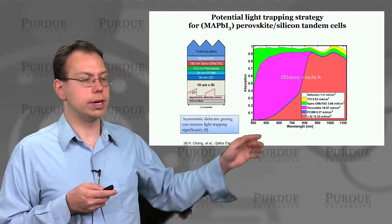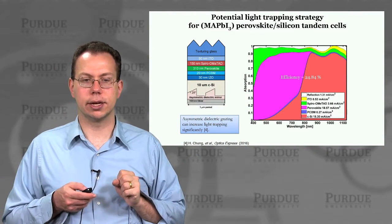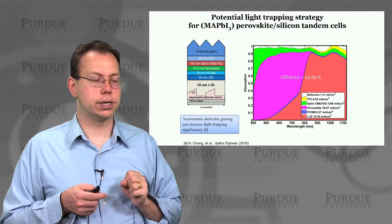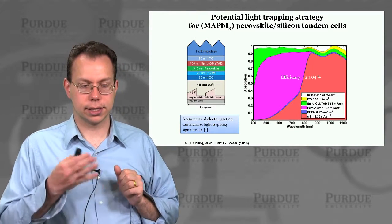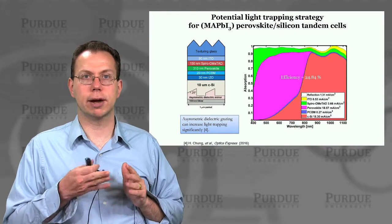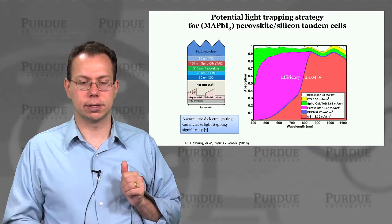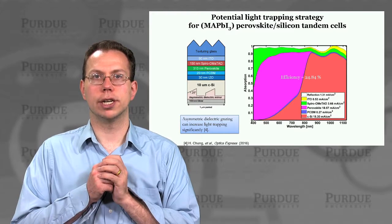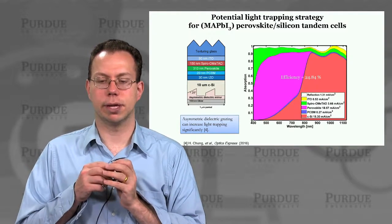Furthermore, if you get rid of the spiroOMeTAD hole transport layer, the efficiency would actually be closer to 27 or 28%. This illustrates the potential for light trapping in these perovskite-silicon tandem cells. In the next lecture, we'll talk in more detail about some other applications of finite difference time-domain methods.